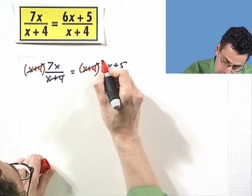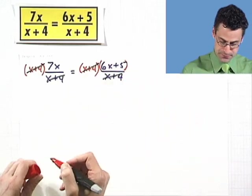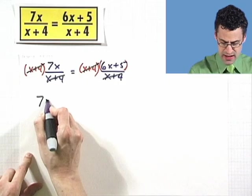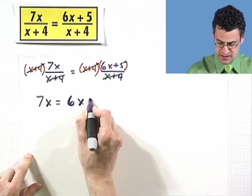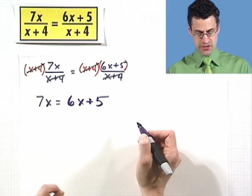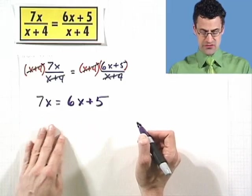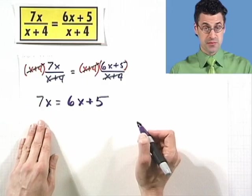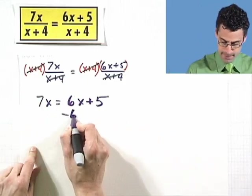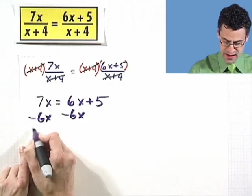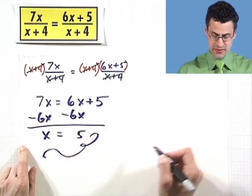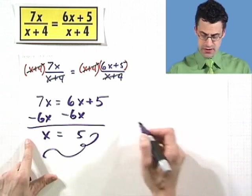We see there's simplification on both sides. What I'm left with is 7x equals 6x plus 5. This we can solve in our heads — subtract 6x from both sides. So 7x minus 6x is just x, so x equals 5. We need to check our answer to make sure this is really okay.